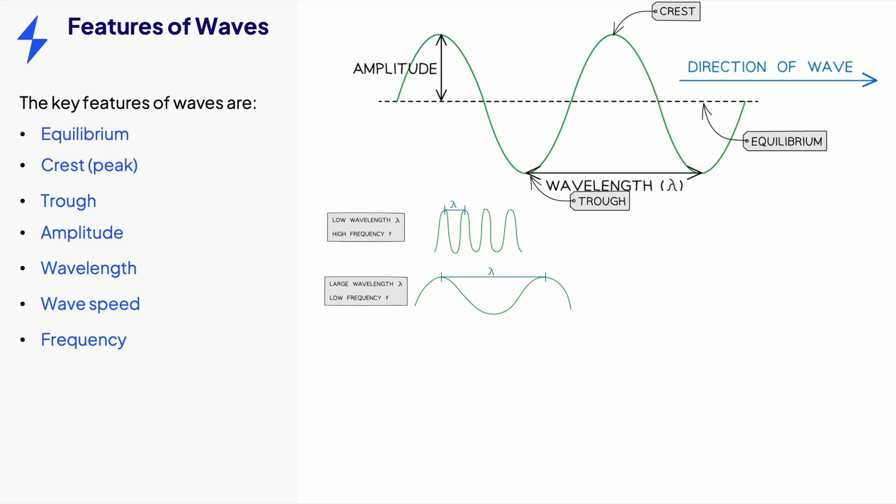The wave speed, frequency and wavelength are related by the wave equation, where the wave speed equals frequency times by the wavelength. This can be used for all waves.